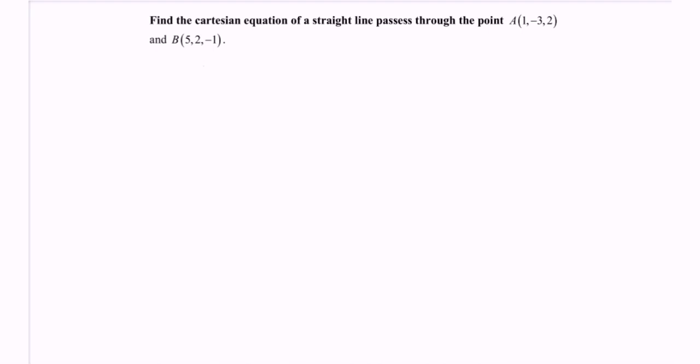Hello everyone, in this video I'm going to discuss an example for vectors. Find the Cartesian equation of a straight line. So here R equals A plus TB. We need a point and also the direction. Passes through the point.